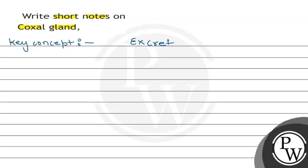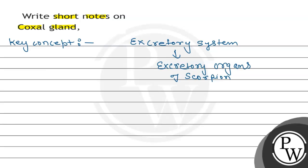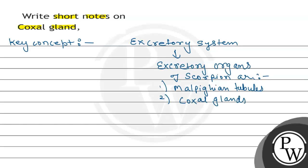The excretory system helps in excretion of nitrogenous waste in the form of urine. The excretory organs of scorpion include malpighian tubules, coxial glands, hepatopancreas, and nephrocytes.